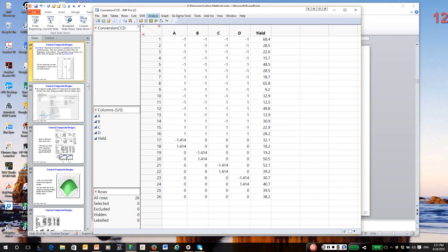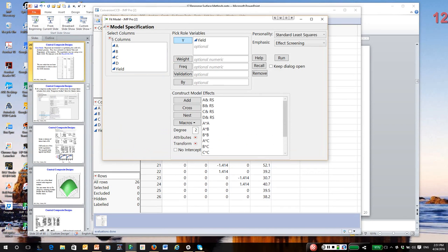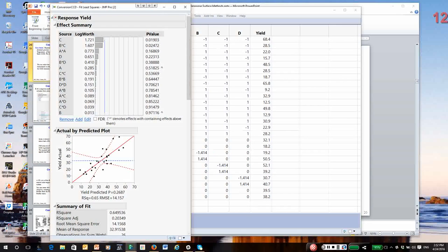We'll go to Analyze Fit Model. I'm going to highlight A, B, C, and D. Under Macros, once again Response Surface—that gives us the full quadratic model to estimate. Yield is the response. And run the model.